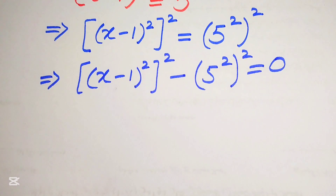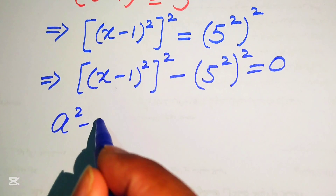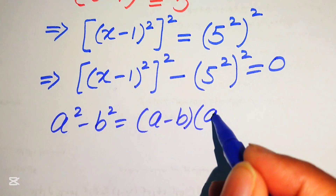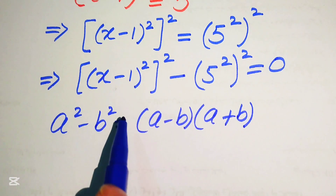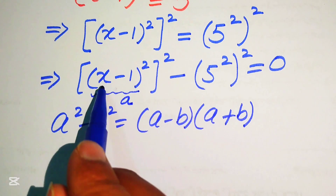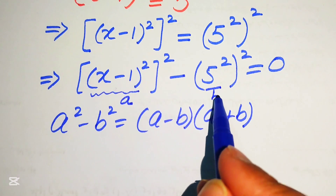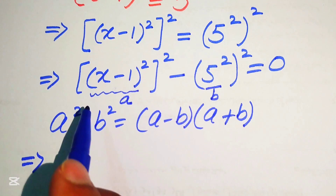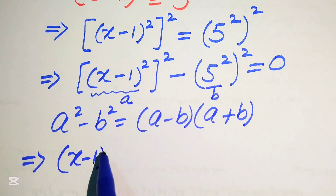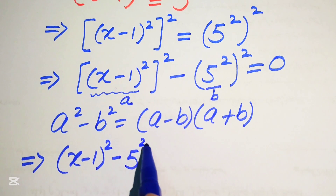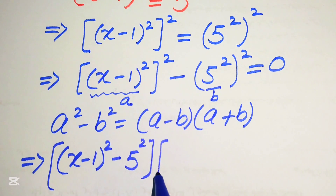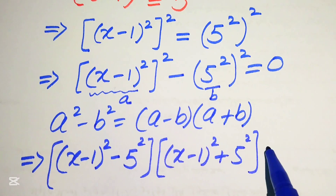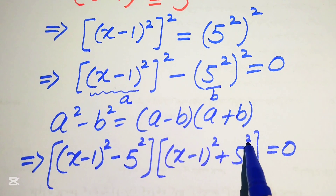Now we need to use the algebraic formula: a squared minus b squared equals (a minus b)(a plus b). Here, a is (x minus 1) whole squared and b is 5 squared. Applying this formula, we write the equation as [(x minus 1)² minus 5²] times [(x minus 1)² plus 5²] equals 0.